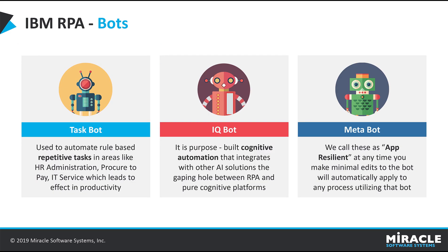There are three bots in IBM RPA: Task Bot, IQ Bot, and MetaBot. Task Bot is mainly used for repetitive tasks in areas like IT service, HR administration, ticketing systems, or data entry. IQ Bot is mainly used to extract both structured and unstructured data. It has the unique ability to learn by studying human behavior to identify common customized layouts and fields, applying human logic to document patterns and extracting values the way a human would.